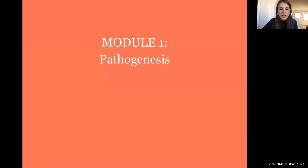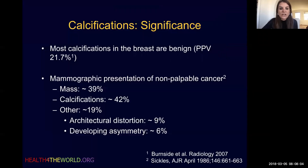For module one, we're going to start by talking about the pathogenesis and some background information on calcifications. So why do we care about calcifications? Most calcifications in the breast that undergo biopsy have been shown to be benign. Studies show a PPV between 20% to 30% for malignancy, so we know that most calcifications that we end up biopsying are benign.